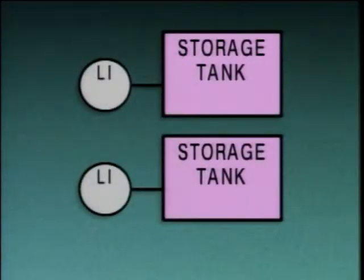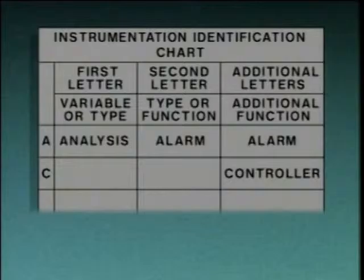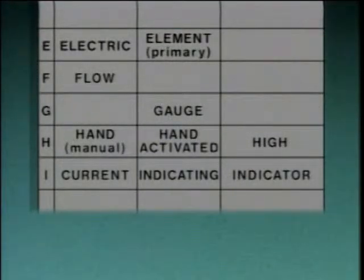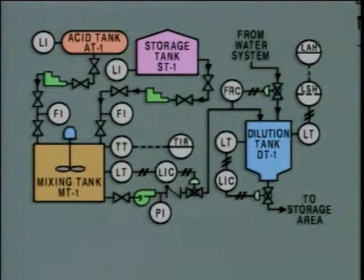In facilities with many similar control systems, numbers and letters may be added to the symbols to identify separate systems. The symbol identification usually matches the identification of the equipment that the control system is associated with. Reading a P&ID involves identifying and interpreting symbols for instruments and other system equipment. Let's go through an example diagram to see how this is done. As we go through the example, we'll use this instrument identification chart to help us identify and interpret the symbols we find there.